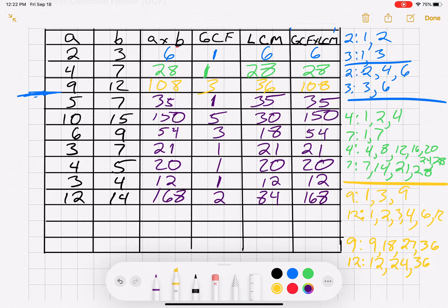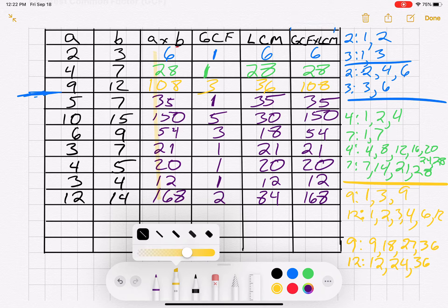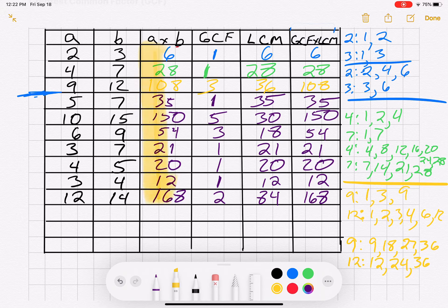So hopefully you notice that A times B, this column here, I'm going to make this fatter here. So A times B, and the greatest common factor times the least common multiple are all the same, right there.